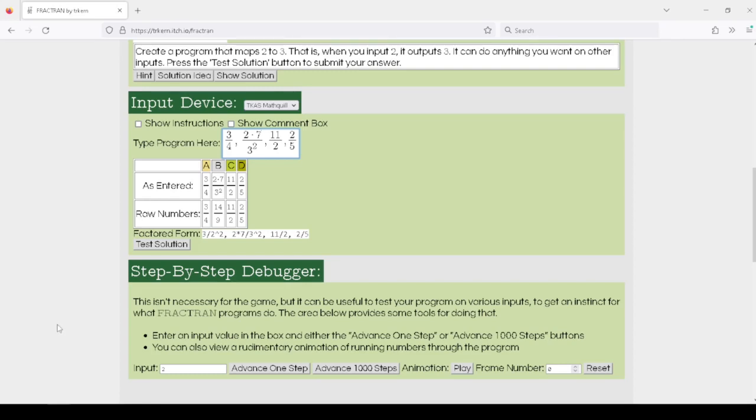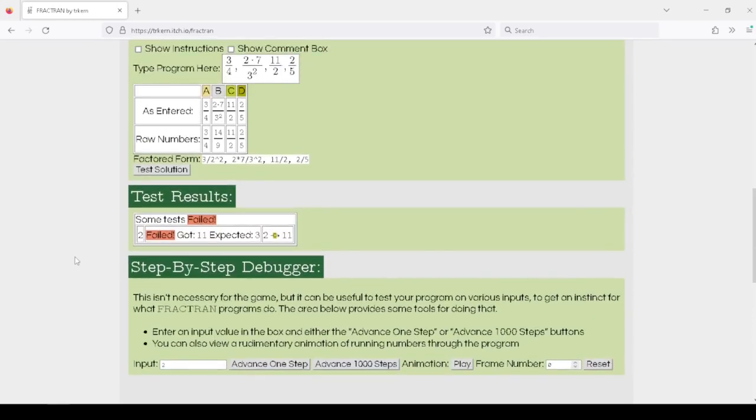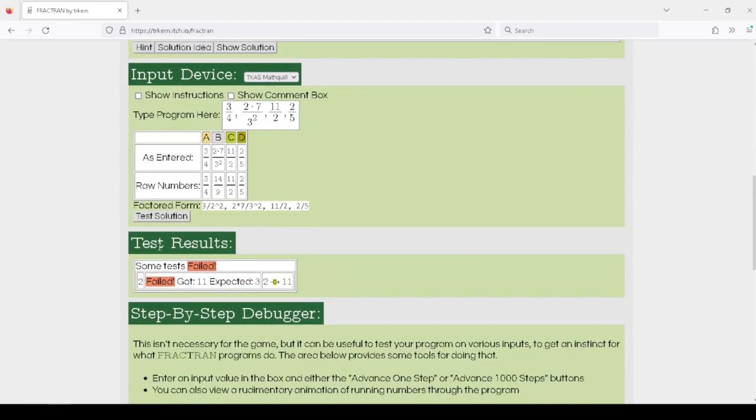Once you think you have a correct solution, hit the test solution button, which will try running the program on appropriate inputs. This will try running the program on input 2. The goal is to turn that 2 into a 3, but this program turns input 2 into 11, so that fails.